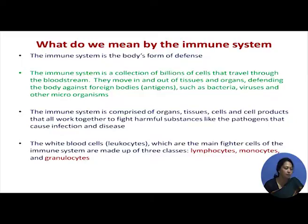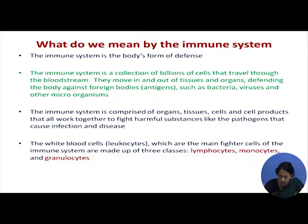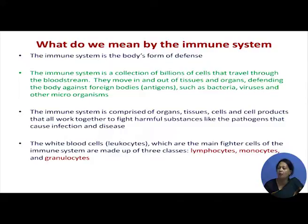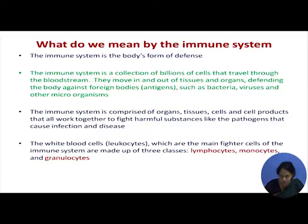The immune system is comprised of organs, tissues, cells, and cell products that all work together to fight harmful substances like pathogens that cause infections and disease. Within the body there are white blood cells, also known as leukocytes, which are the main fighter cells of the immune system. These leukocytes are made out of lymphocytes, monocytes, and granulocytes. We will touch this briefly so you understand what the individual system is actually going through.